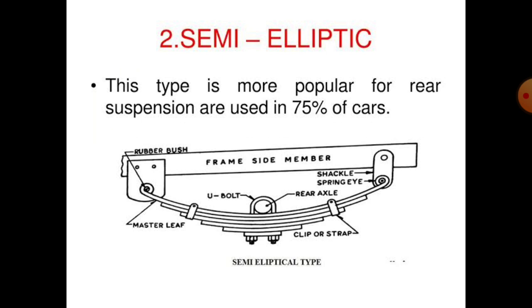The second type is the semi-elliptical spring, which is more popular for rear suspension and used in 75% of cars. In this diagram, the longest leaf is the master leaf. Both ends are connected — one end fixed to the chassis rear frame and the other connected via a shackle at the rear side. A U-bolt is connected to the rear axle, along with clips.